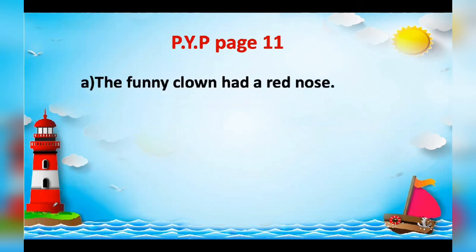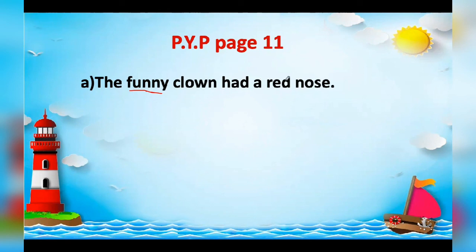Number one: 'The funny clown had a red nose.' The word 'funny' describes the quality of the clown — it is funny — so 'funny' is an adjective. Underline it. What kind of nose? A red nose. The word 'red' describes the color of the nose, so it is also an adjective.